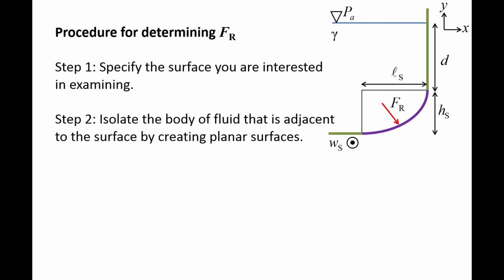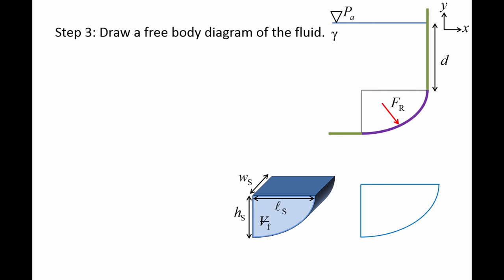Next, we isolate the body of fluid that is adjacent to the curved surface, and we do this by creating planar surfaces. Here is what the fluid body looks like when rotated slightly. The volume of the isolated fluid body will be denoted as Vf. Next, we draw a free body diagram of the isolated fluid body. The weight of the isolated fluid body acts at its center of mass and points downward.